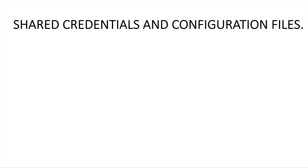Hello. In this session we will look at how we can make use of shared credentials and the shared configuration files to give Terraform the necessary permissions to create the resources on the AWS platform. In the last couple of sessions we looked at how we can provide the access key and secret key within the provider block, and then how we can make use of environment variables to store the access key and secret key. This is the third option, where we can store the credentials in a file and call that file in the provider block to give the necessary permission.